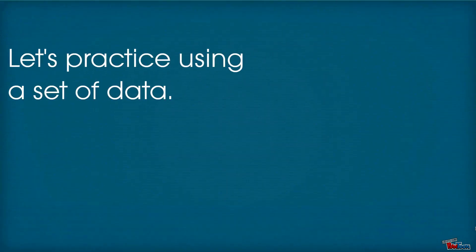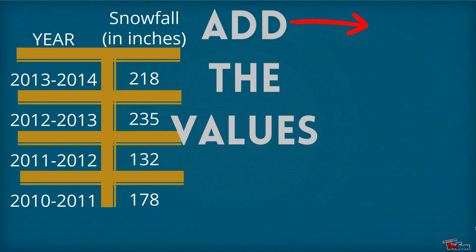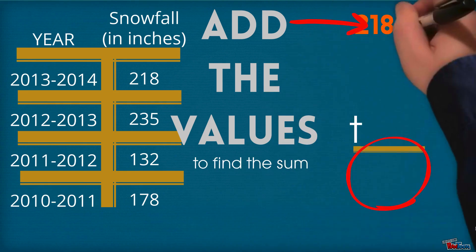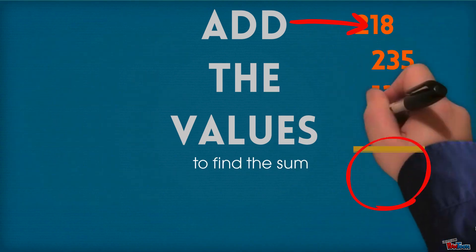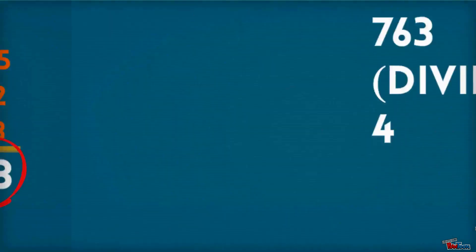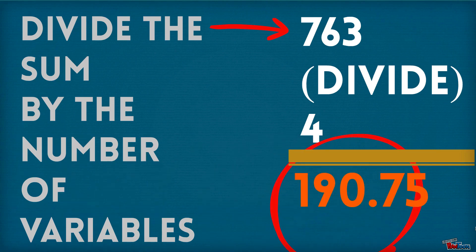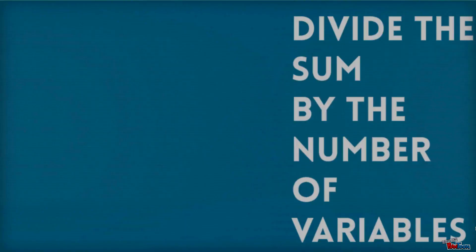Let's practice using a set of data. This chart tells us how much snow fell over the course of four years. The first thing we're going to do is add the values to find the sum — we get 763. Then we divide the sum by the number of variables, which is 4, and we get our answer to be 190.75.